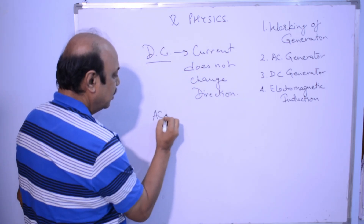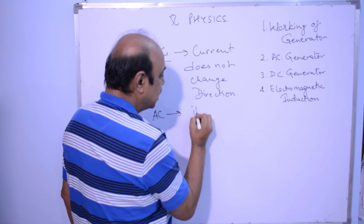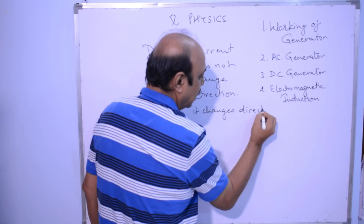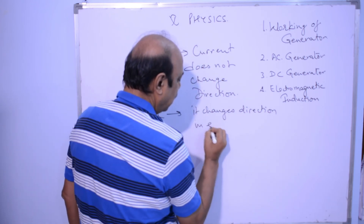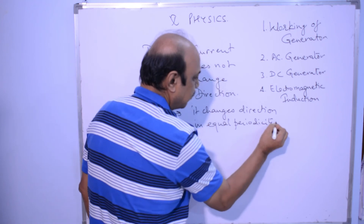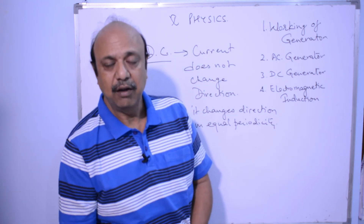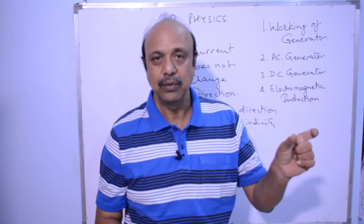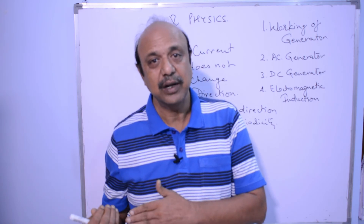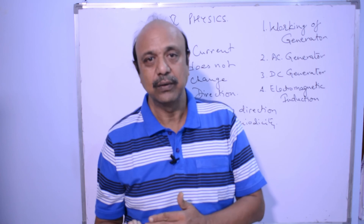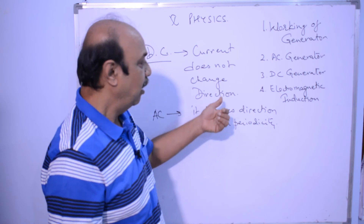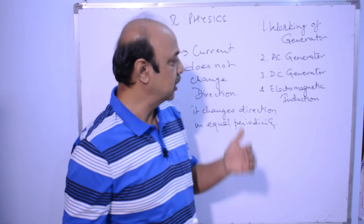In alternating current, the current changes direction in equal periodicity. That means if for x seconds the current is in the positive direction, then for x seconds the current is in the negative direction, then back to positive, then back to negative, and the time interval remains the same. Only then is it called alternating current. If it always remains positive or negative, it is direct current.